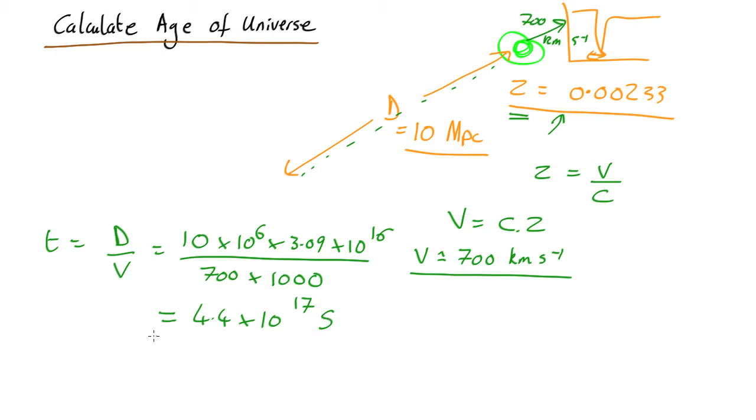Let's convert into something more meaningful. If we divide by 365, by 24, by 60, and by 60, one after another, to go from seconds to minutes, minutes to hours, hours to days, days to years, that comes out as about 14 billion years.